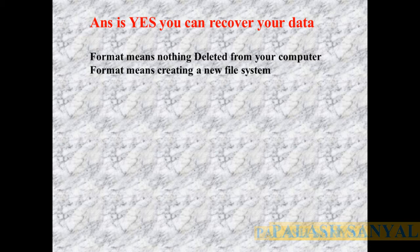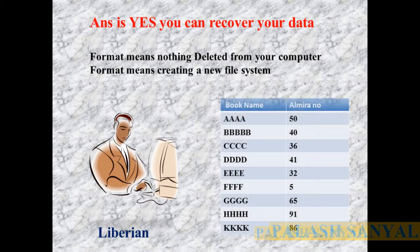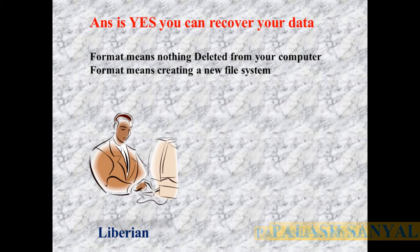Think of yourself as a librarian who has a file listing your books and their shelf numbers. If anyone asks for a book, you check the file and give them the book. But if one day that file is missing, even though the same books are still there, you cannot give that book to anyone because your list of files is gone. The same thing happens with your computer.